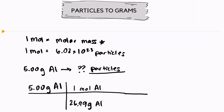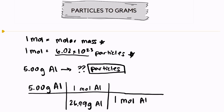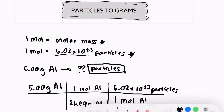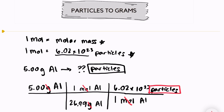We have to use the conversion that one mole is equal to 6.02 times 10 to the 23rd particles. The question is whether this large number goes on the top or the bottom of our fraction. We're looking for the unit particles, so it needs to go on top, because the unit of mole needs to cancel out. When a unit appears on both the top and bottom of a fraction, it cancels — grams cancel and moles cancel, leaving us with particles, which is exactly what the question asks for.